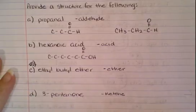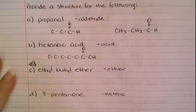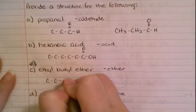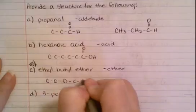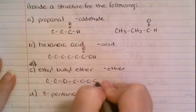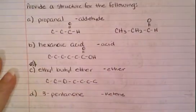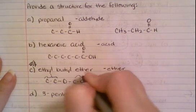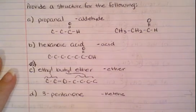Now what about this crazy ether? Remember the ether has an O bonded to two R groups, one on either side. So this one is simply C bonded to C bonded to O and then four C's. So the two C's here indicate the ethyl and the four C's here indicate the butyl.